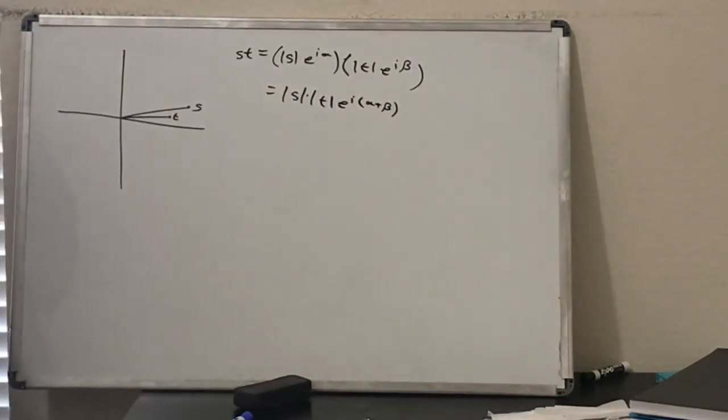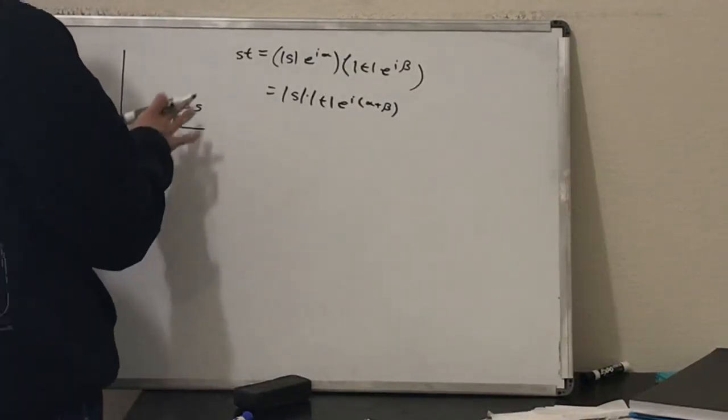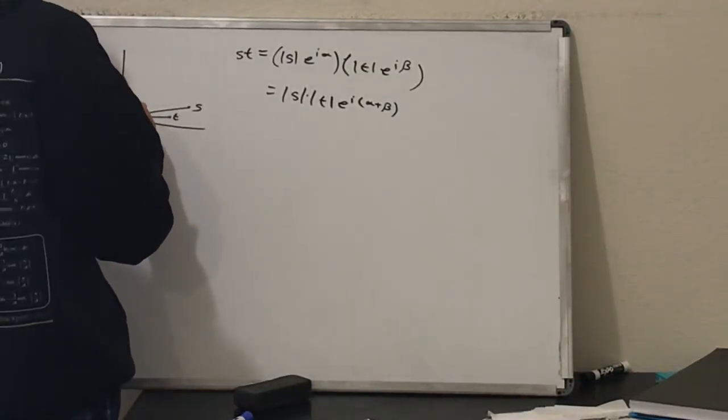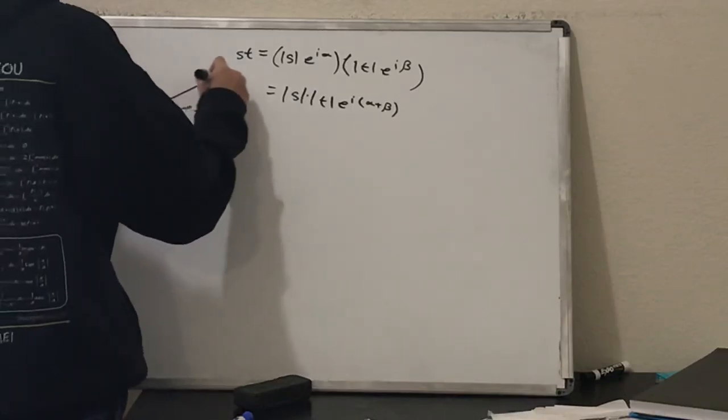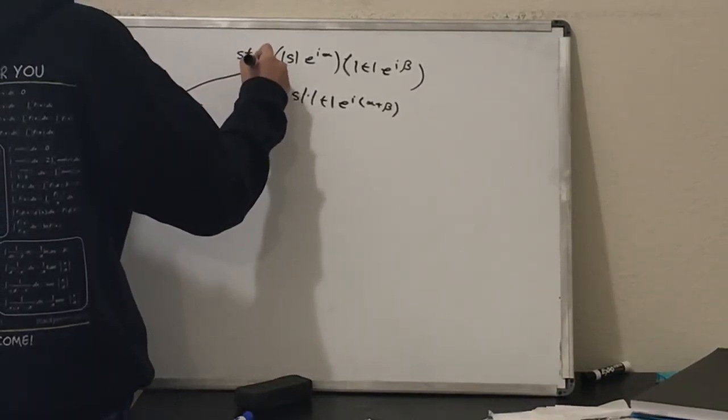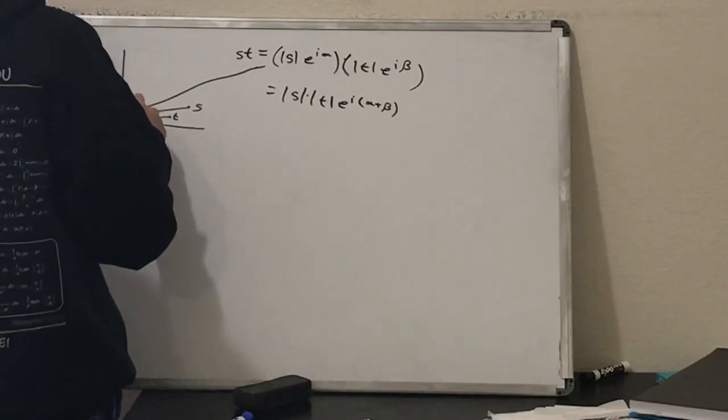So that's pretty cool. What it says is when you're multiplying s and t, what you do is first you multiply the magnitudes, and then you add the angles.